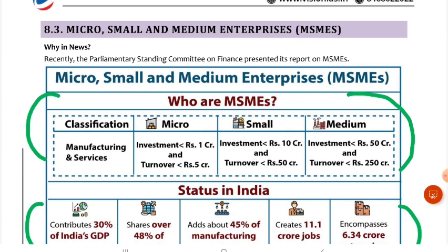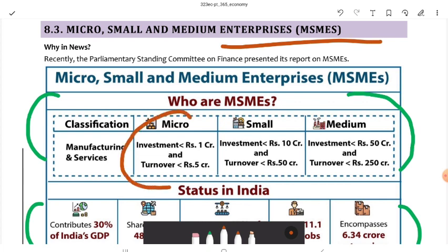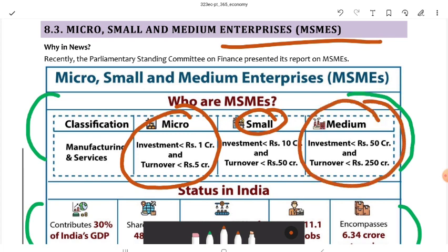Let's move to MSMEs — Micro, Small and Medium Enterprises. All classifications apply to both manufacturing and services. The Parliamentary Standing Committee on Finance released a report on this. Micro enterprises have investment up to ₹1 crore and turnover up to ₹5 crore. Small enterprises have investment up to ₹10 crore and turnover up to ₹50 crore. Medium enterprises have investment up to ₹50 crore and turnover up to ₹250 crore.